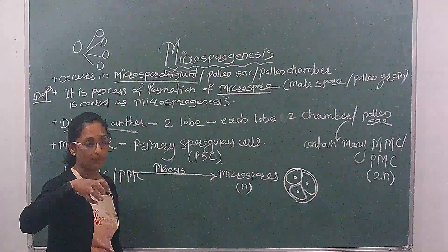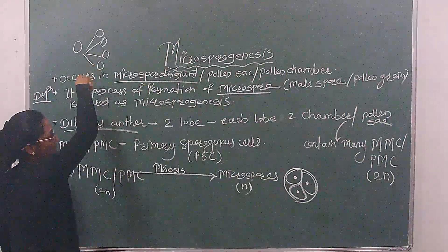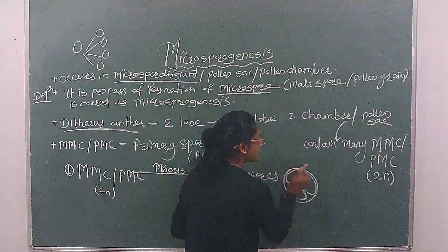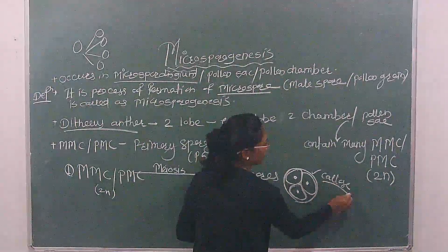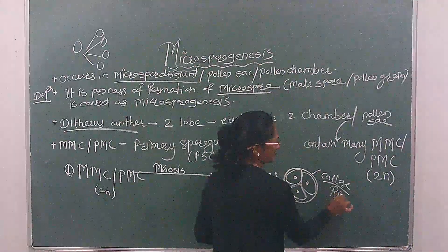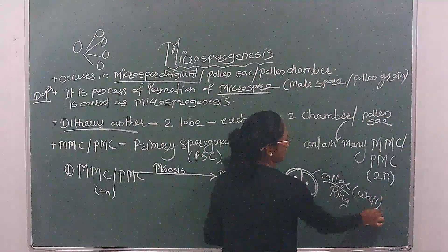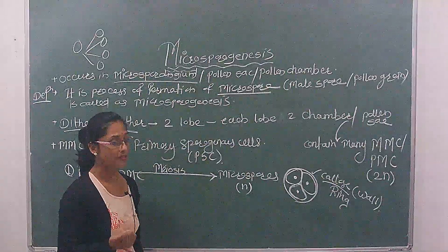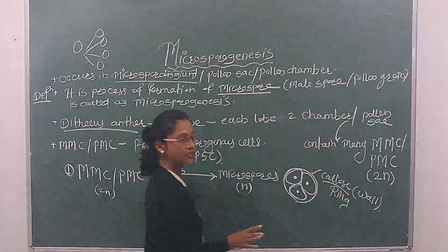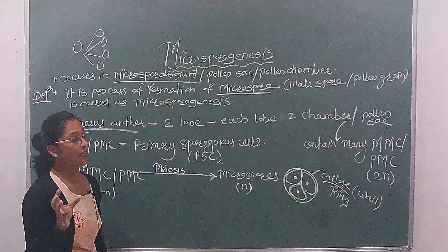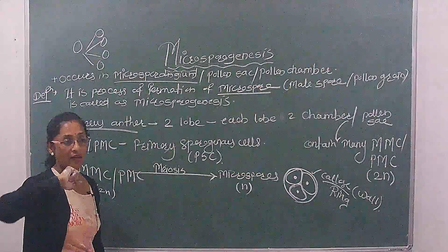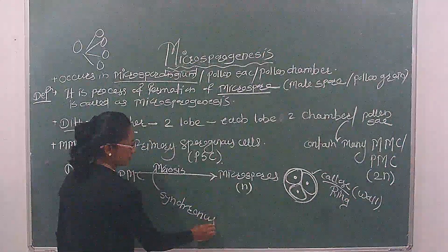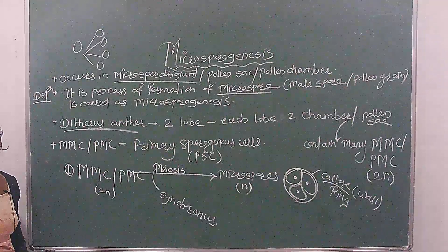We have seen that four daughter cells are formed. Here all four haploid microspores are formed and grouped into a single unit with a callose wall present. Callose wall is made from cellulose. Actually after meiosis, the four don't separate. This four has only one wall present. This meiosis is called synchronous type of meiosis.